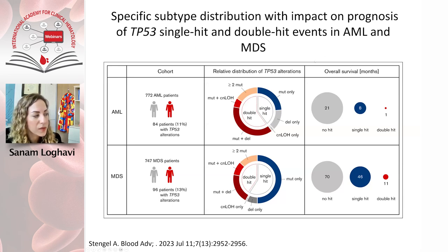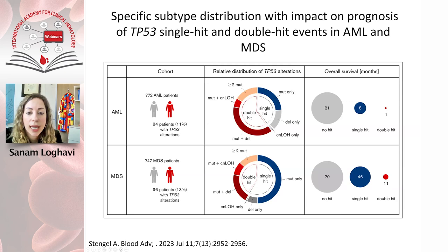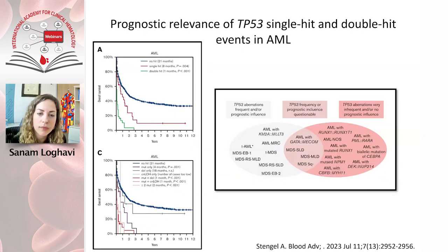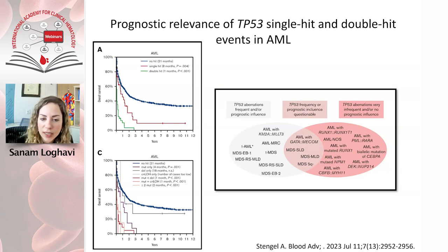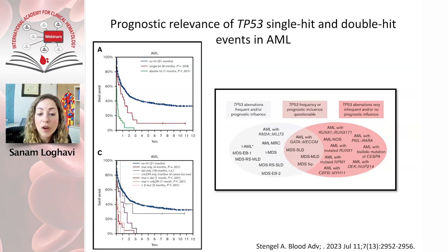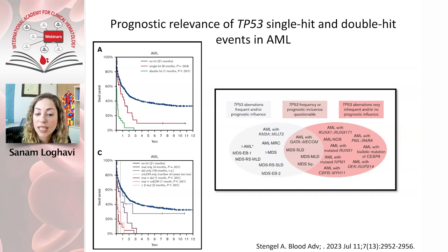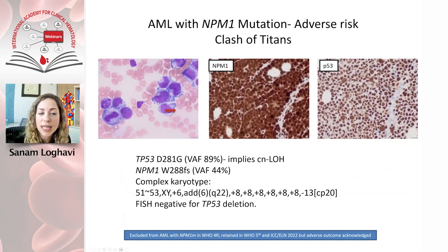A recent study highlights the prognostic significance of biallelic TP53 in AML: patients with single-hit had an overall survival of eight months, whereas double-hit patients had an overall survival of one month. Context is relevant — TP53 in the context of myelodysplasia-related AML, therapy-related AML, MDS, or AML with KMT2A is very bad. But very rarely, TP53 aberrations occur in otherwise favorable-risk AML like RUNX1-RUNX1T1. In current WHO and ICC classification, NPM1 supersedes TP53, so such a case is still classified as NPM1-mutated AML, but both systems acknowledge the TP53 mutation may indicate adverse outcomes.